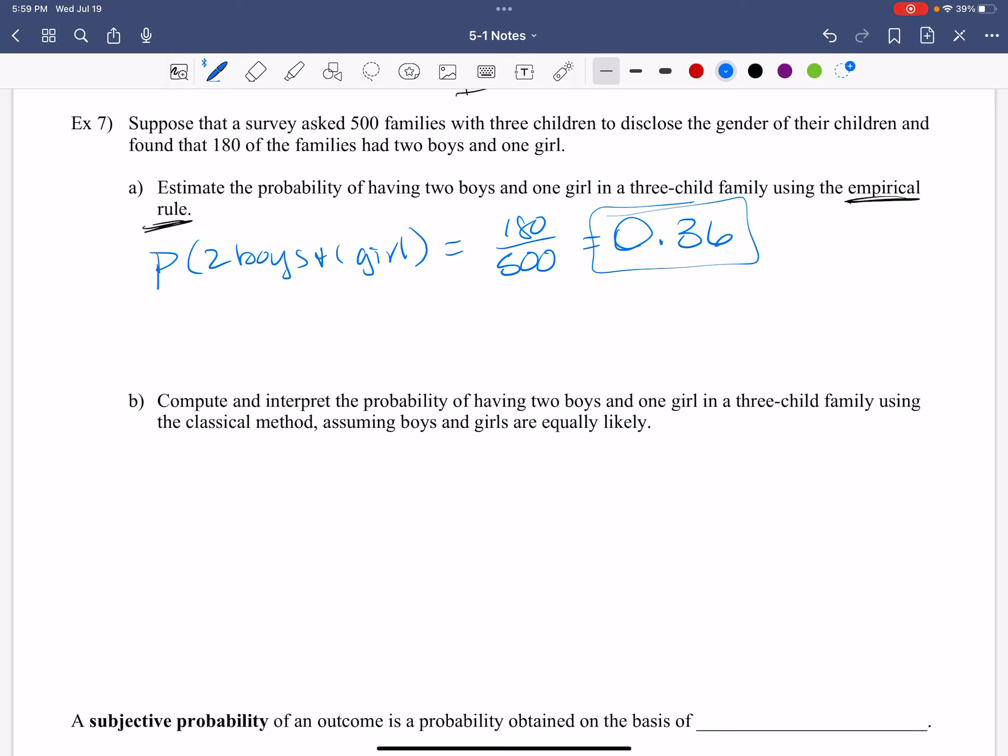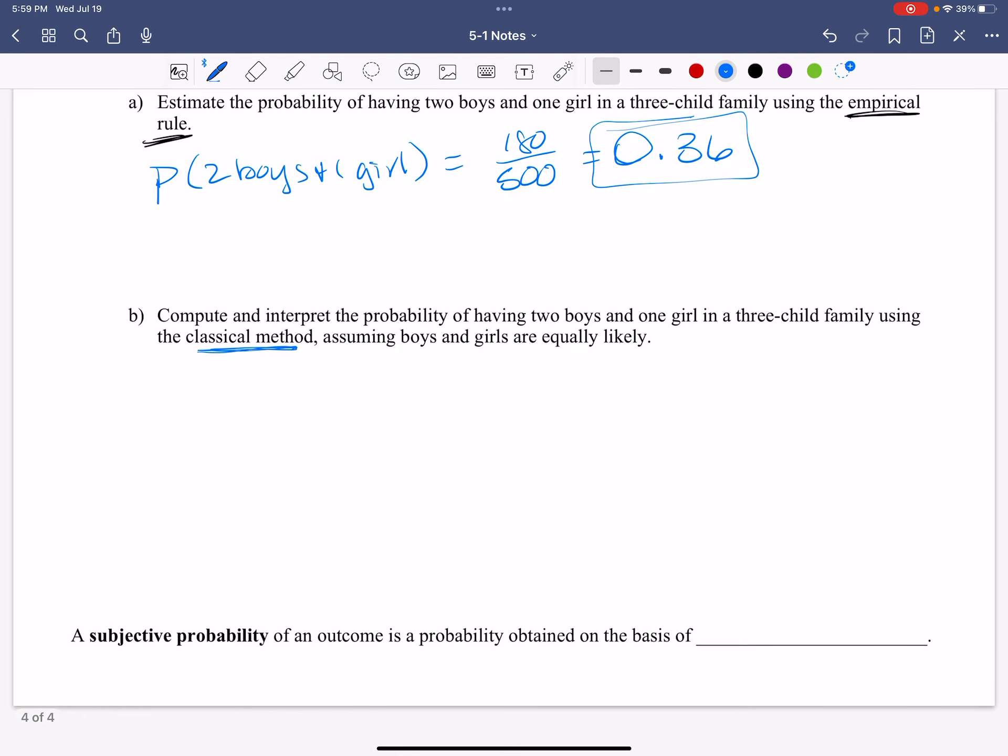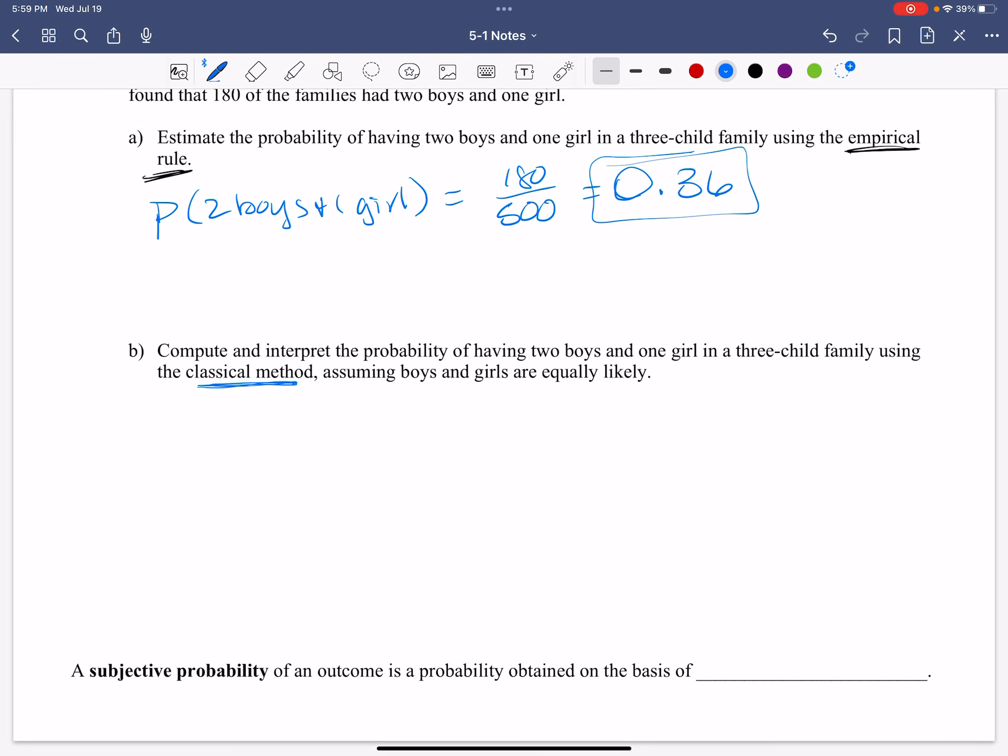Now, compute and interpret the probability of having two boys and a girl in a three-child family using the classical method saying what options are available, assuming boys and girls are equally likely. Now, when we do something like this, we like to have a tree diagram, it's called. All right. So I'm going to start over here and it's equally likely to have a boy or a girl. And that is your first kid. Then let's say you have a boy first. It's equally likely to have a boy or a girl. If you have a girl first, it's equally likely to have a boy or a girl. And that is your second kid. Do you see how we're doing this?